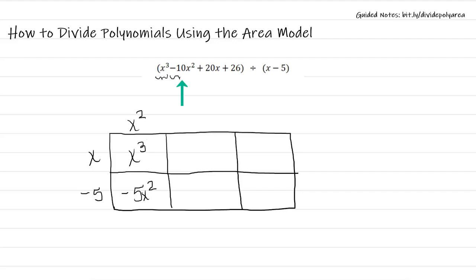So now I'm going to work on this negative 10x squared. I have negative 5x squared minus 5x squared. Add these two together, that gives you negative 10x squared. Now x times negative 5x gives me negative 5x squared. I'm going to move down here. We're looking at negative 5x times negative 5. That's going to give me a positive 25x.